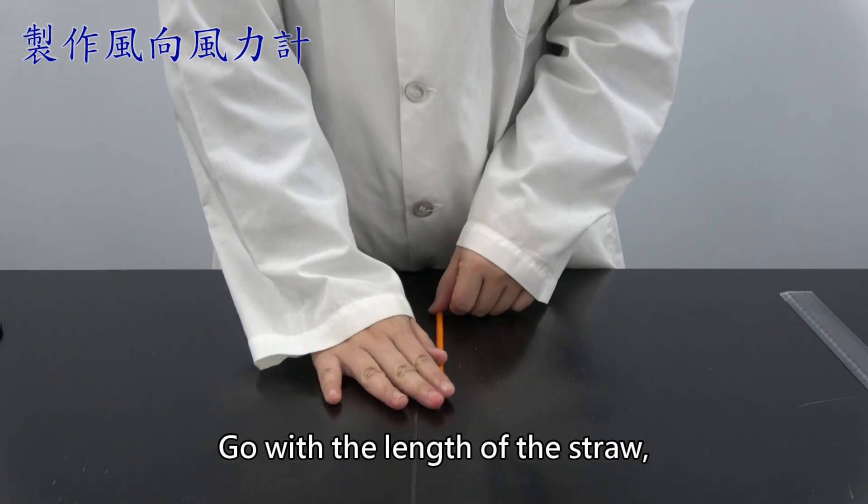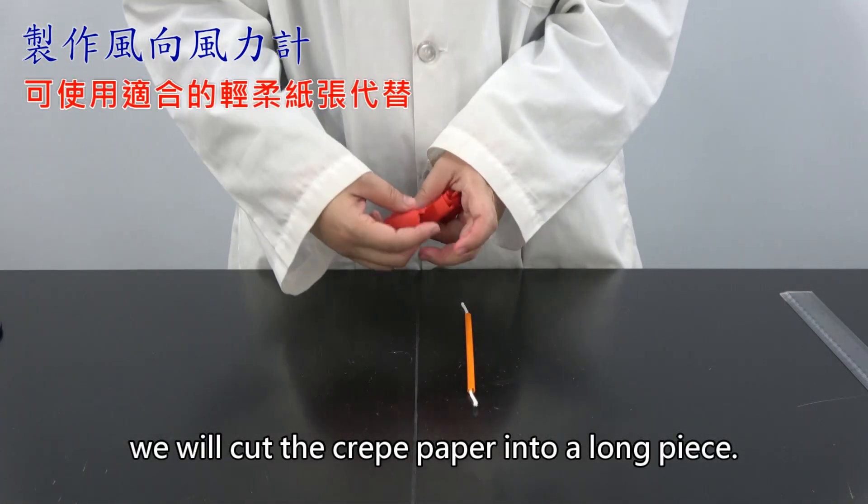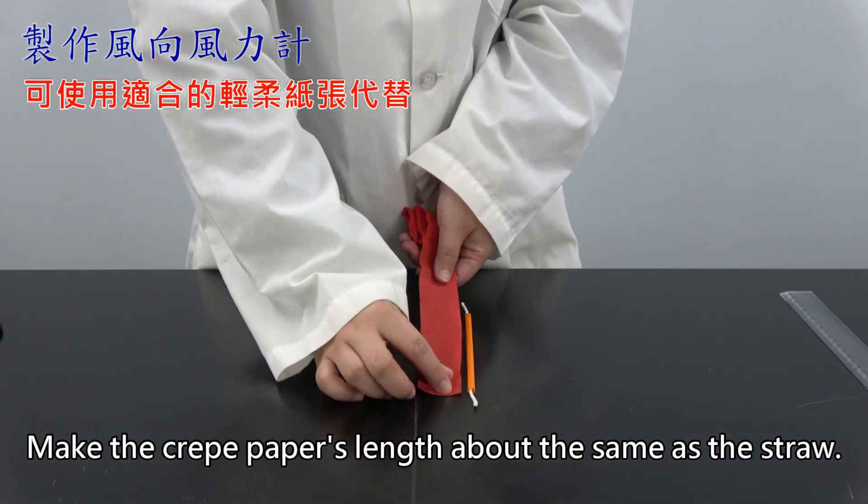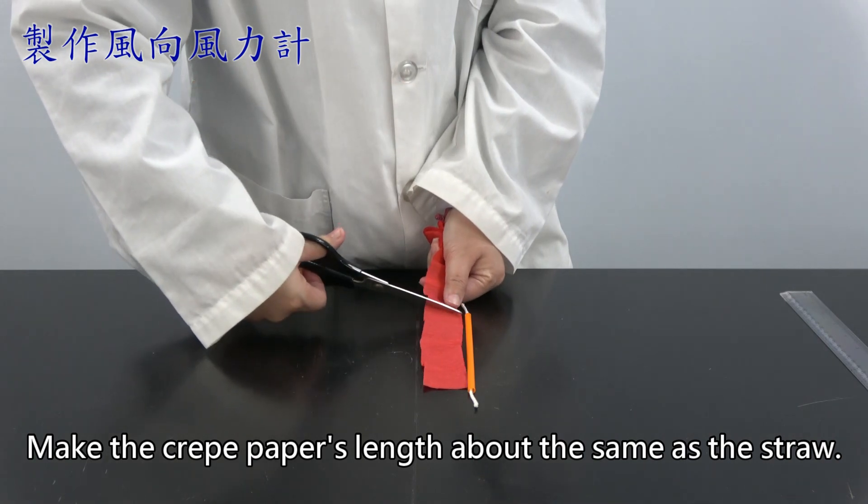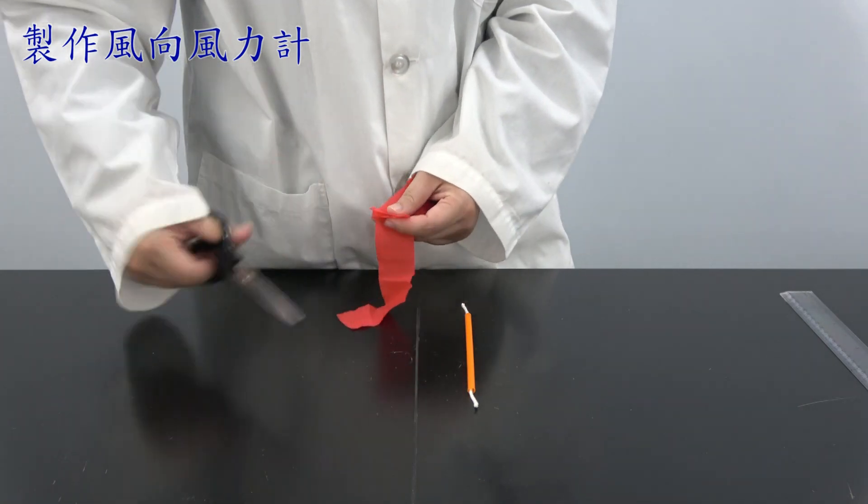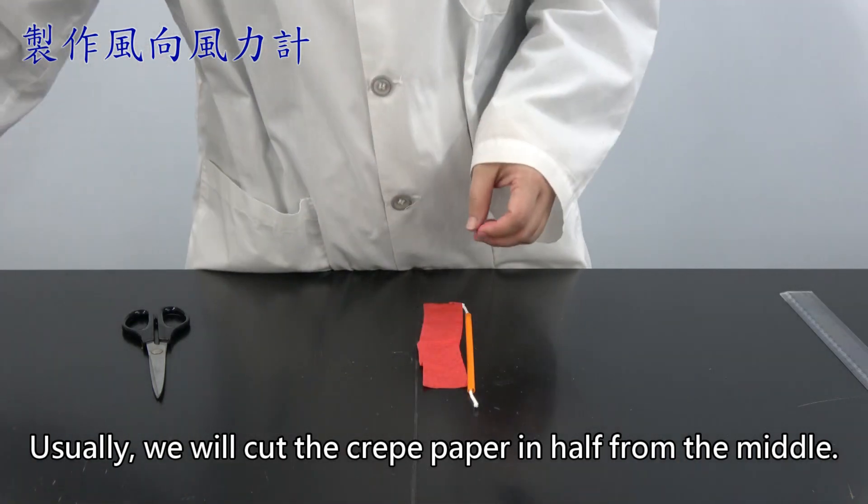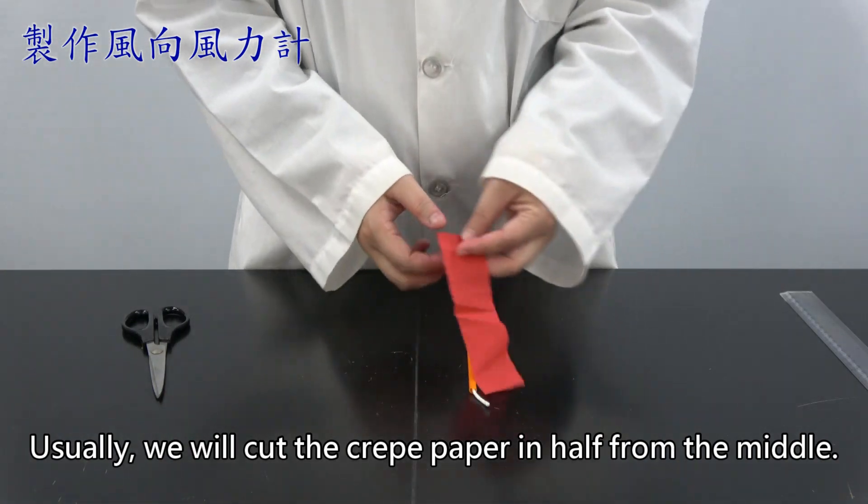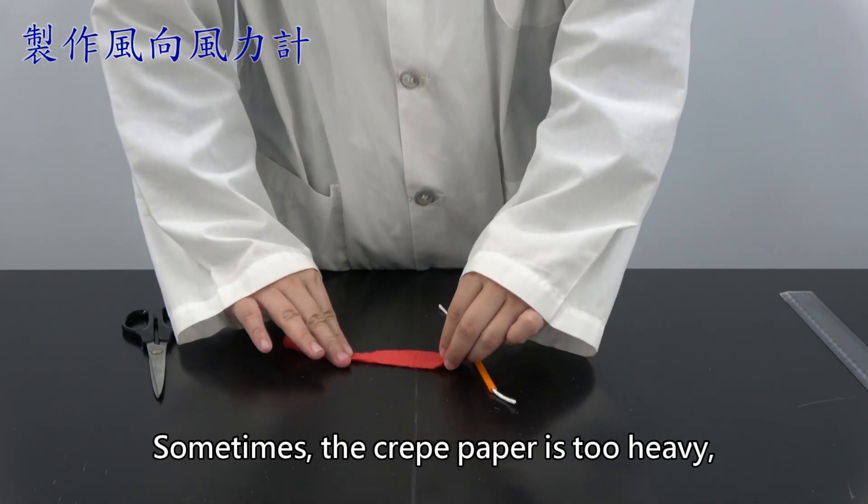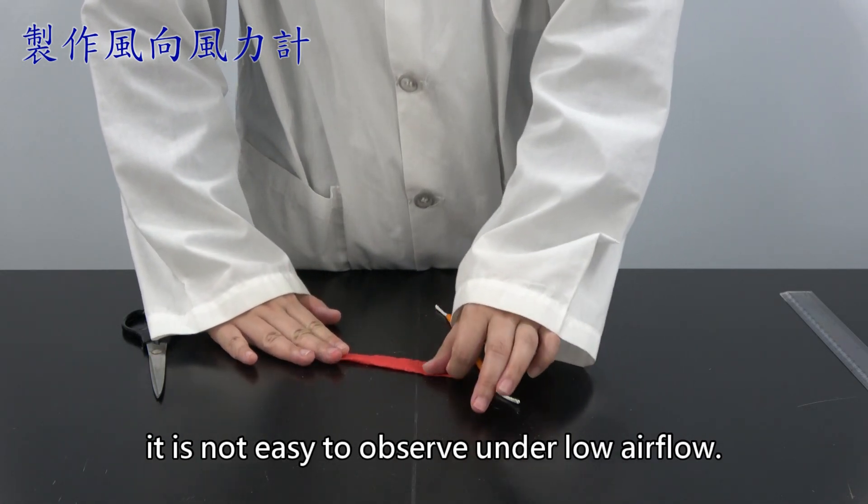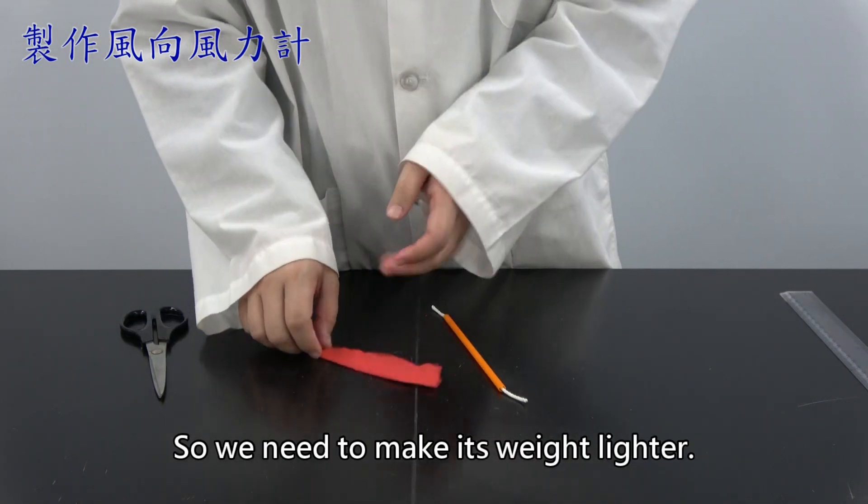Go with the length of the straw. We will cut the crepe paper into a long piece. Make the crepe paper's length about the same as the straw. Usually, we will cut the crepe paper in half from the middle. Sometimes, the crepe paper is too heavy. It is not easy to absorb under low air flow. So we need to make its weight lighter.